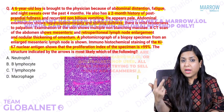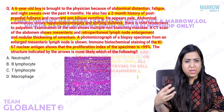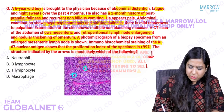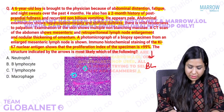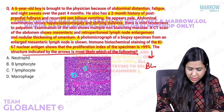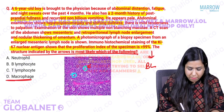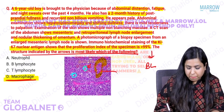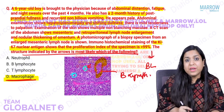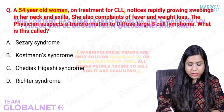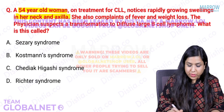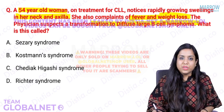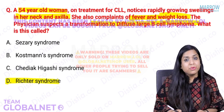A 6-year-old boy with abdominal distension, fatigue, night sweats, hepatosplenomegaly, mesenteric and retroperitoneal lymph node enlargement on CT, and Ki-67 of greater than 99% — starry sky appearance on photomicrograph. This is Burkitt lymphoma. The arrow in the image points to a macrophage (forming the 'star'), while the background cells are B lymphocytes. A 54-year-old woman on treatment for CLL with rapidly growing neck swellings and weight loss — transformation to DLBCL is Richter syndrome.